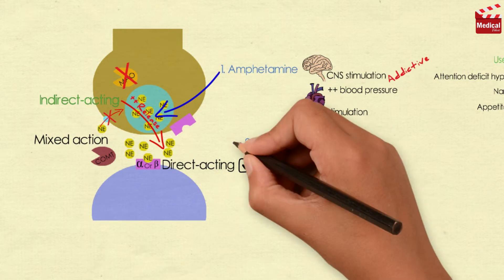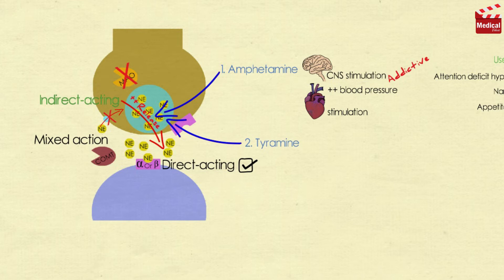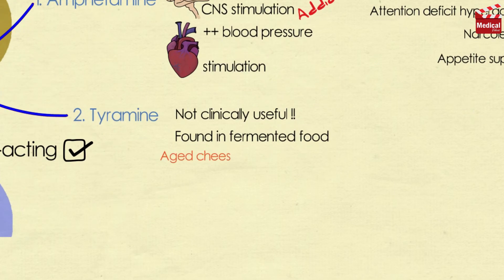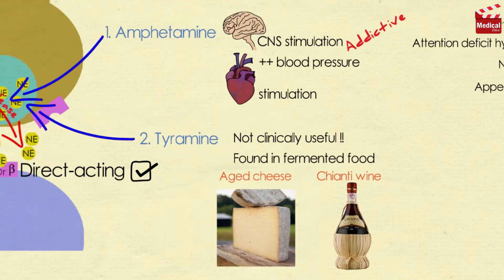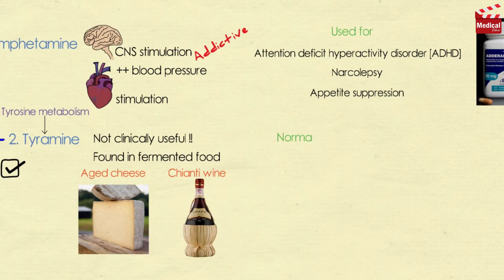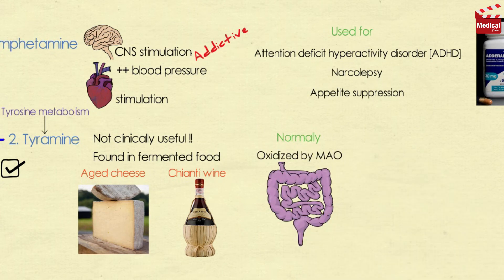Tyramine is another agent that enhances the release of catecholamines from nerve terminals, increasing their concentration in the synapse and potentiating their effects. It is not a clinically useful drug, but it is important because it is found in fermented foods such as aged cheese and Chianti wine. It is a normal by-product of tyrosine metabolism. Normally it is oxidized by MAO in the gastrointestinal tract, but it can precipitate serious hypertensive episodes in patients receiving MAO inhibitors.